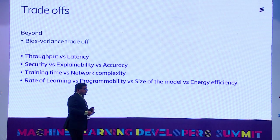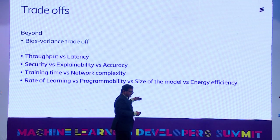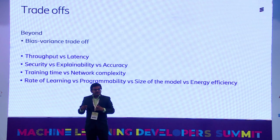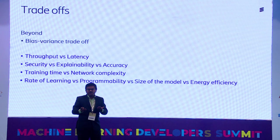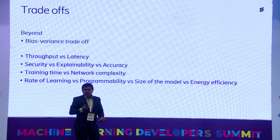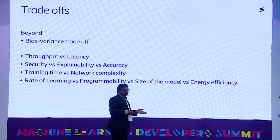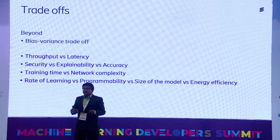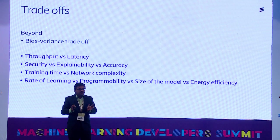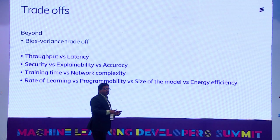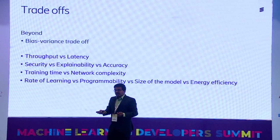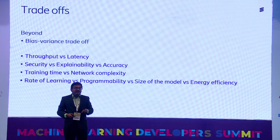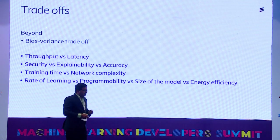The last takeaway is the trade-offs framework. First: throughput versus latency. If I want to increase throughput, I may need to compromise on latency. Second: security, explainability, and accuracy. If I need the model to be more secure, it may need to be a black box, but then I may not be able to satisfy regulator or customer requirements for explanation. If the model is complex, explainability reduces but accuracy may increase. Third: training time versus network complexity — as you have more time, you can increase complexity.